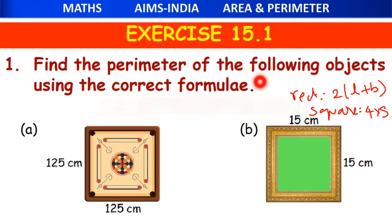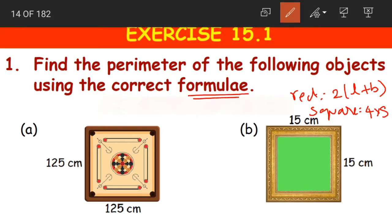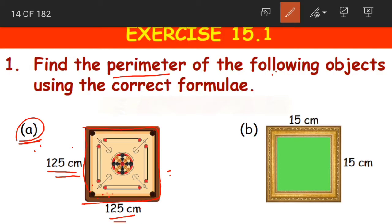Find the perimeter of the following objects using the correct formula. If you look at the first question, it is question A. We are having a carom board and the lengths given are 125 cm and 125 cm. Now this is a square — all the sides are equal. So what will be the formula for finding the perimeter of a square? 4 into S.